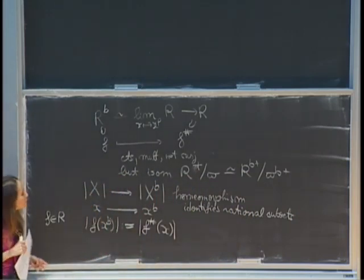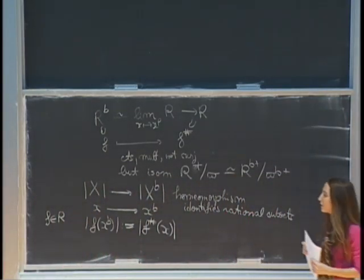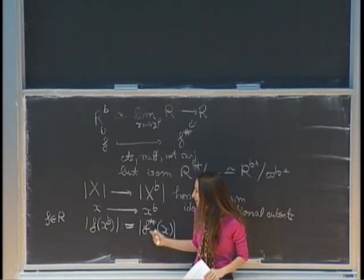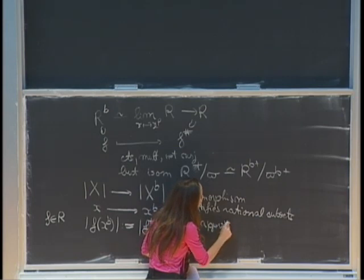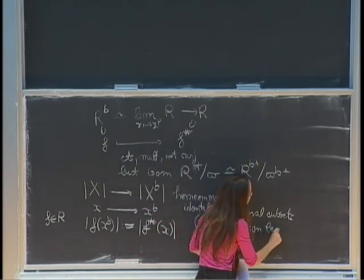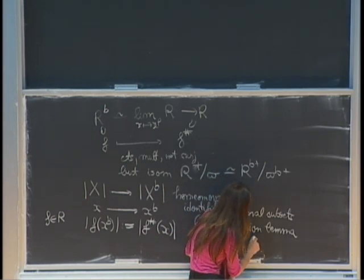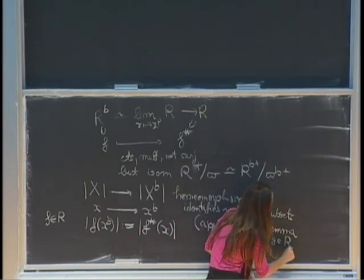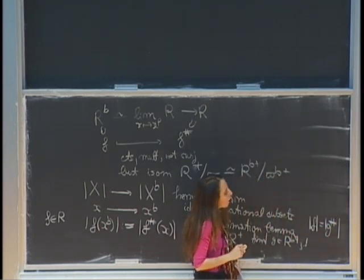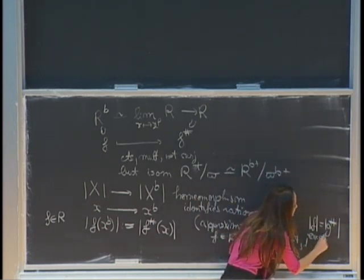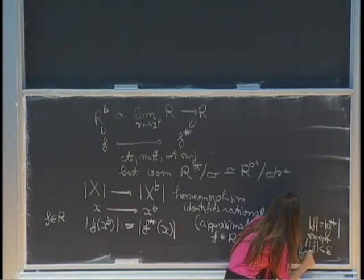To see that it identifies rational subsets, recall that rational subsets are defined by certain inequalities. If you define an inequality using f and g, you have to show that rational subset can also be defined in terms of sharps. For that you need an approximation lemma: given f, you can find g in R-flat-plus such that f equals g-sharp, except when both are very small — when f is less than some epsilon, g will also be less than some epsilon.